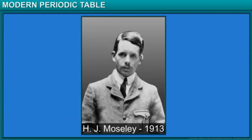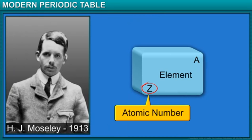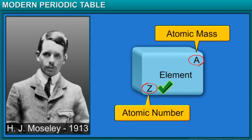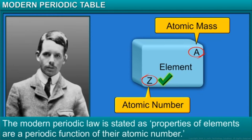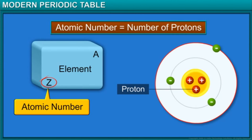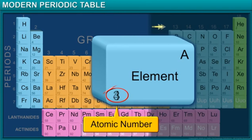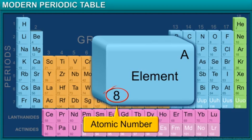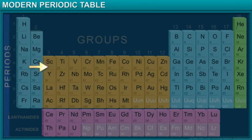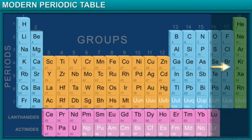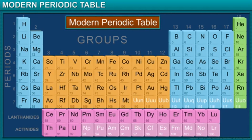In 1913, Henry Moseley showed that the atomic number of an element is a more fundamental property than its atomic mass. So, Mendeleev's periodic law was modified and atomic number was adopted as the basis of the modern periodic table. The modern periodic law states that the properties of elements are a periodic function of their atomic number. Atomic number is the number of protons in an atom and it increases by one unit going from one element to the next. Elements, when arranged in order of increasing atomic number, lead us to the classification known as the modern periodic table.